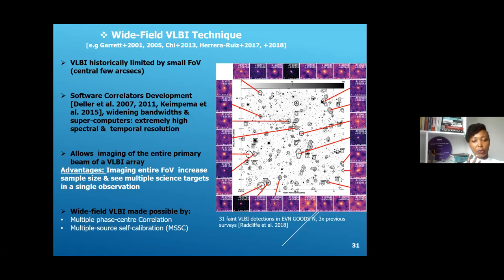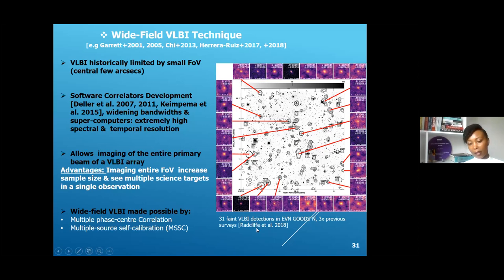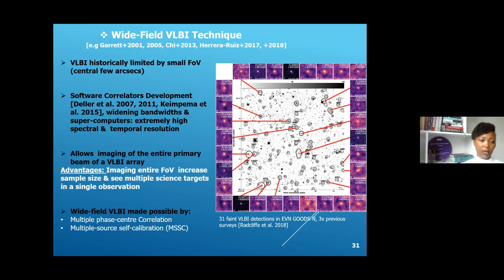With the capability to image the entire primary beam of a VLBI array, we increase the field of view, increase the sample size, and are able to see multiple targets in a single observation. For example, this is the GOODS-N field observed with the EVN. Radcliffe et al. applied this wide-field technique and was able to triple the number of detections from 12 in the previous survey all the way to 31. Clearly the wide-field VLBI technique has great impact on our observations. This has been made possible by two key techniques: multiple phase center correlation and multiple source calibration.